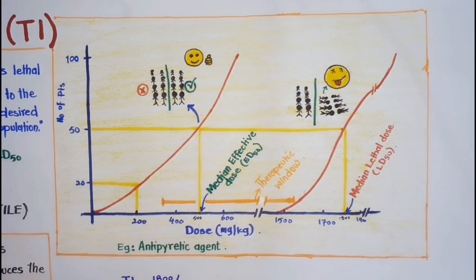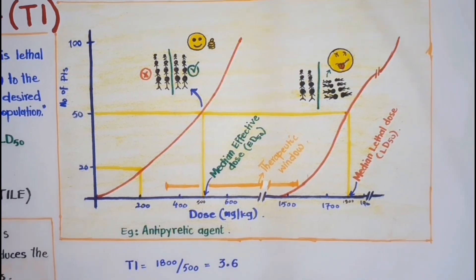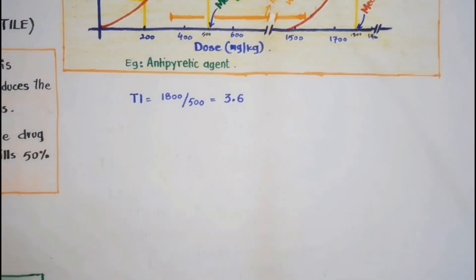Now, let's put these values in the equation. So, in this case, the therapeutic index for this agent is 3.6.